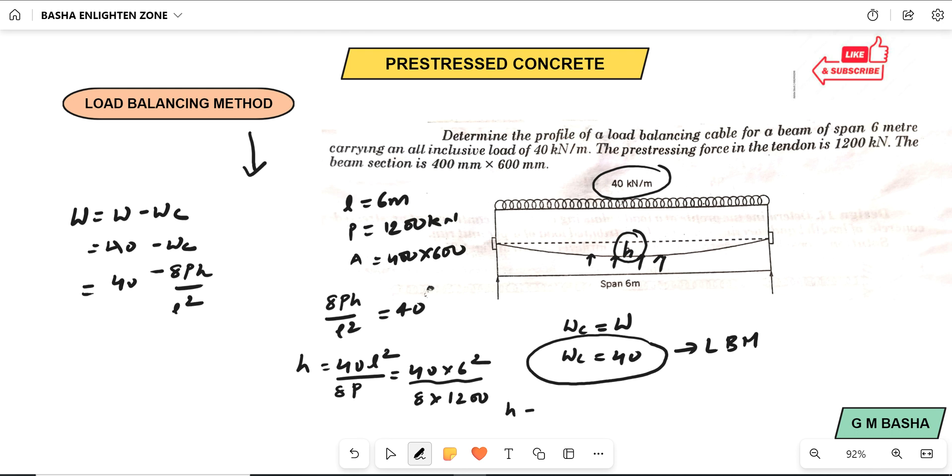P value will be equal to 1200 in kilonewtons. If you simplify, how much the dip of the value you will get? After calculating the dip of the cable, you will get around 0.15. Here length of this span is in meters, you will get meters only, which is 0.15 in terms of meters only.